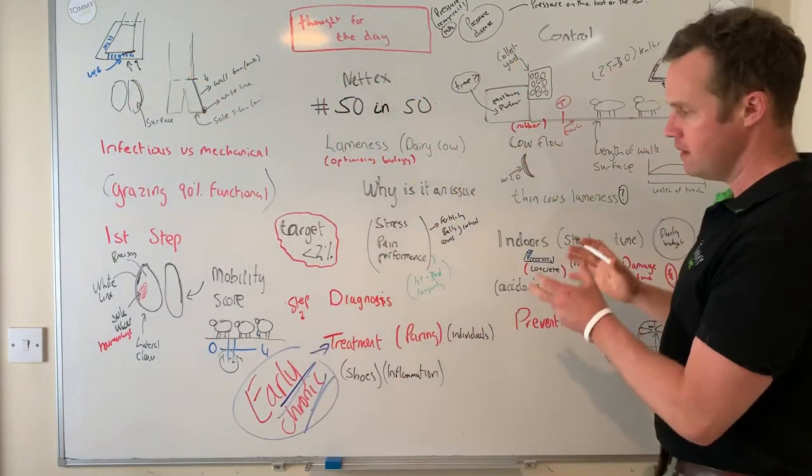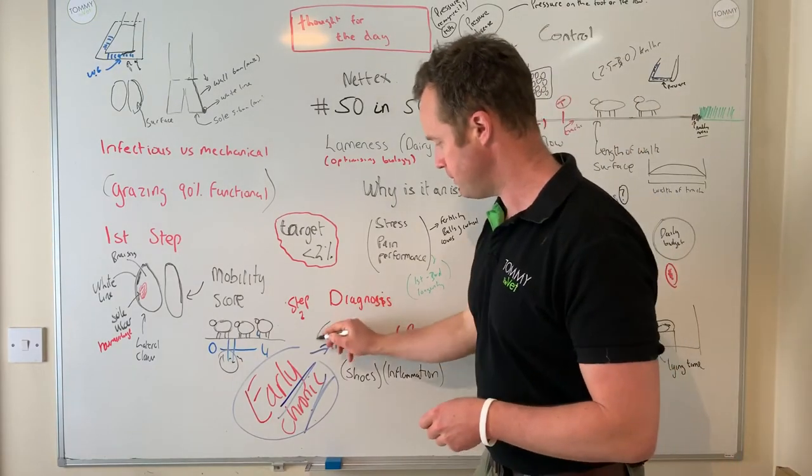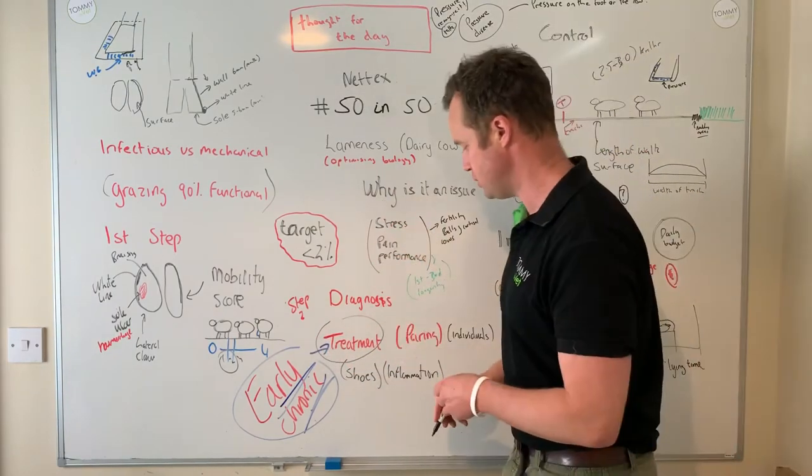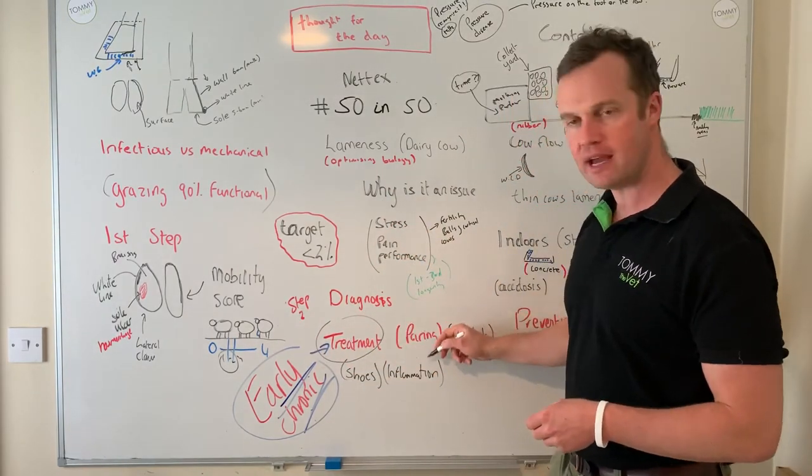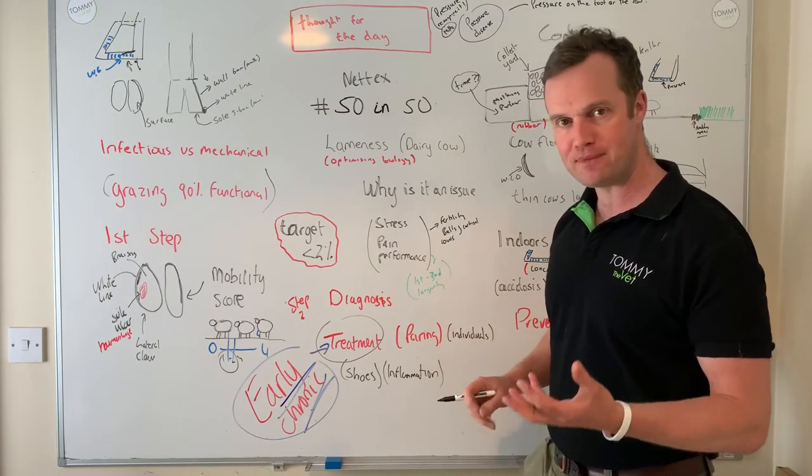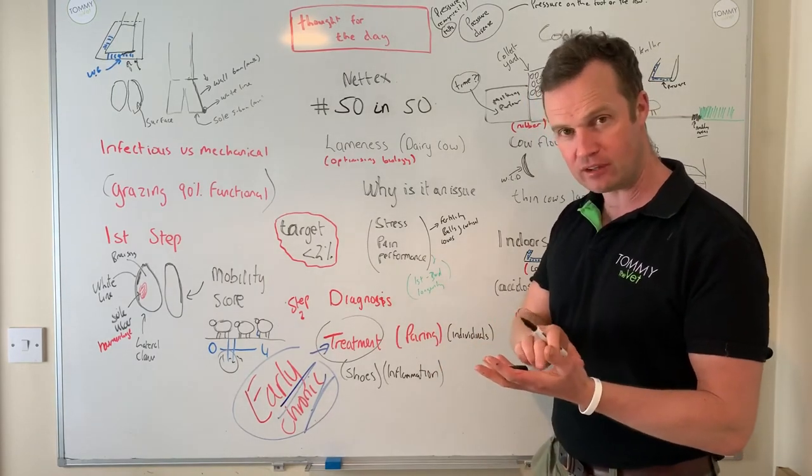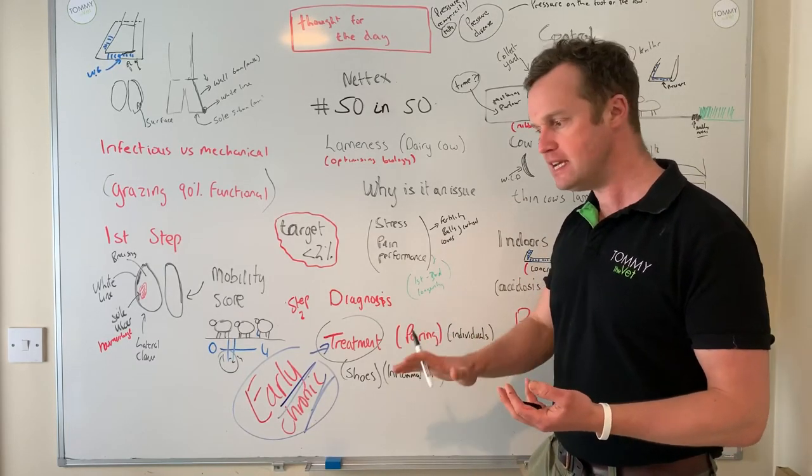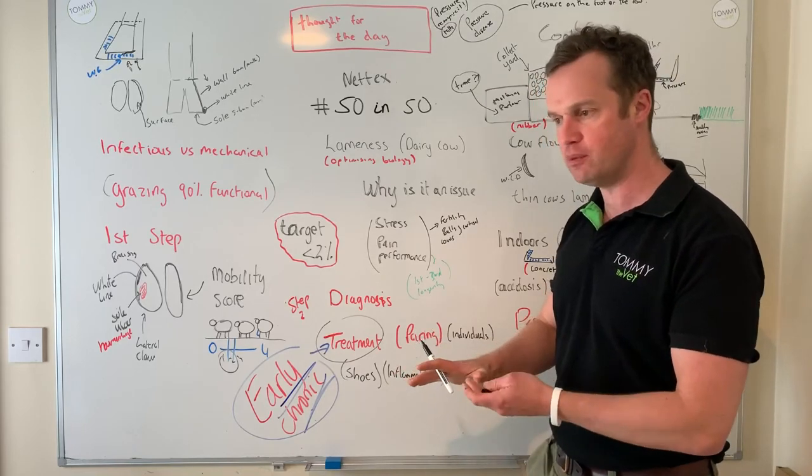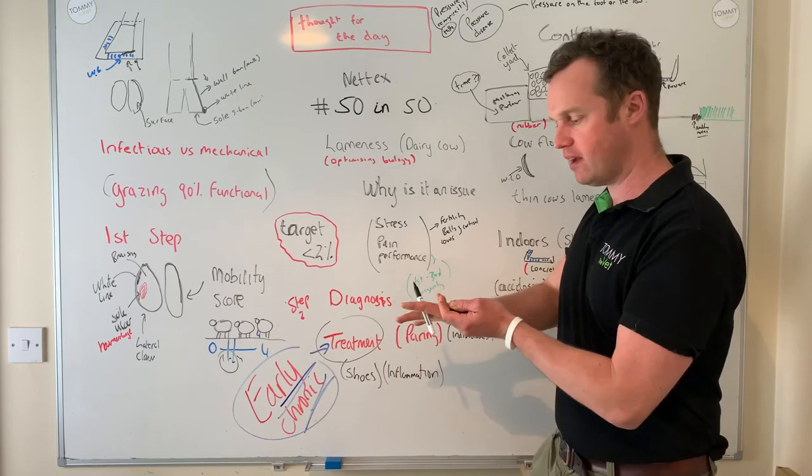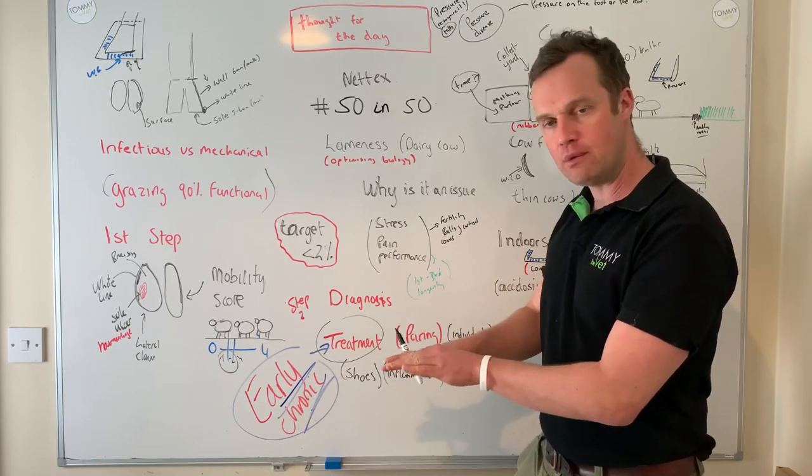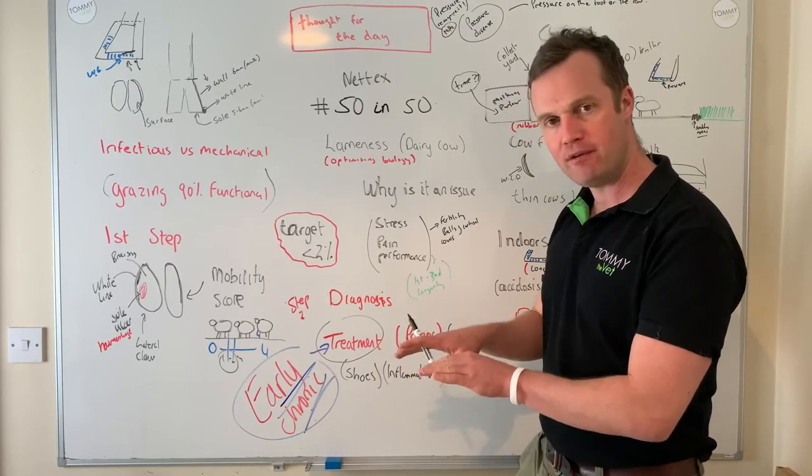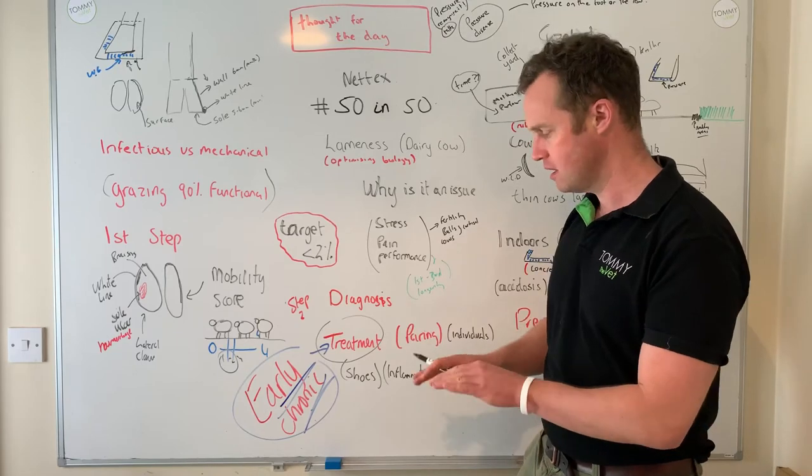If we're getting lameness, early treatment is really important. For functional mechanical issues we can look at pairing to clean up that hoof. But if it's inflamed, if it's bruised and if it's bleeding and sore, think about basic medicine. We need to relieve the pressure off it. The type of tissue it is, we've got to take that impact off. Blocks work really well. A block on the healthy side, balanced up, allowing that tissue to heal and pairing it back.